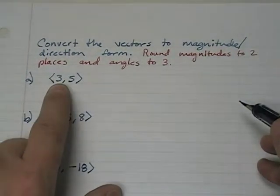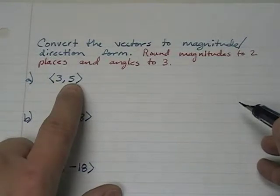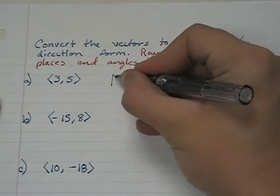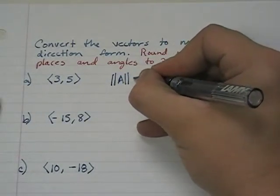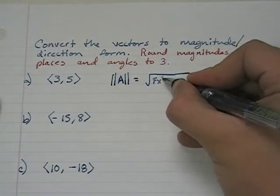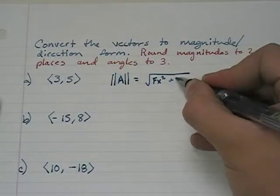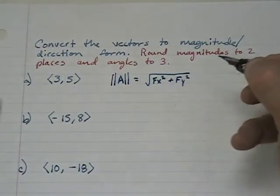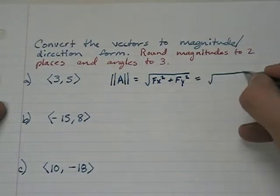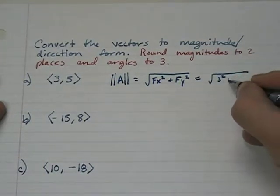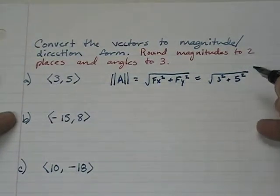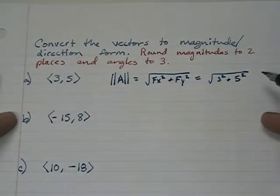Vector a has an x component and a y component. The magnitude of any vector is going to be equal to the x component squared plus the y component squared and then take the square root. In the case of our vector, the x component is three, the y component is five.